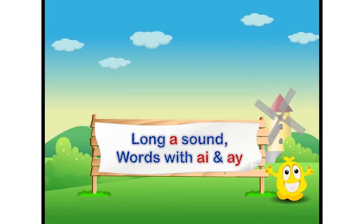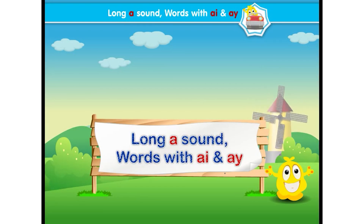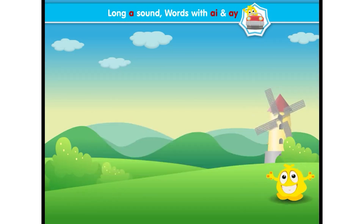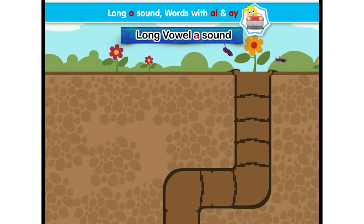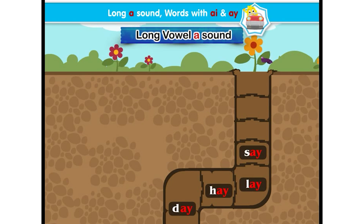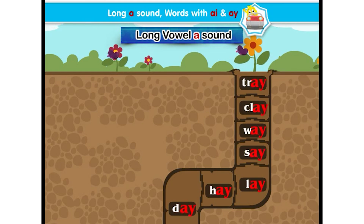Long vowel A sound. Words with A-I and A-Y. Let's start with long vowel A sound. It's a word trail. Observe the spelling pattern and listen to its sound: day, hay, lay, say, weigh, clay, tray. In all these words, A-Y has a single sound.